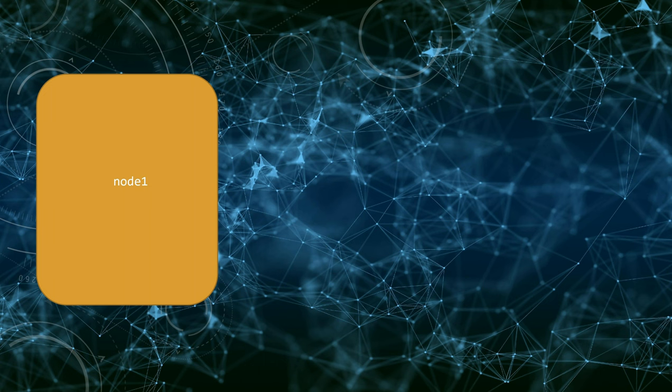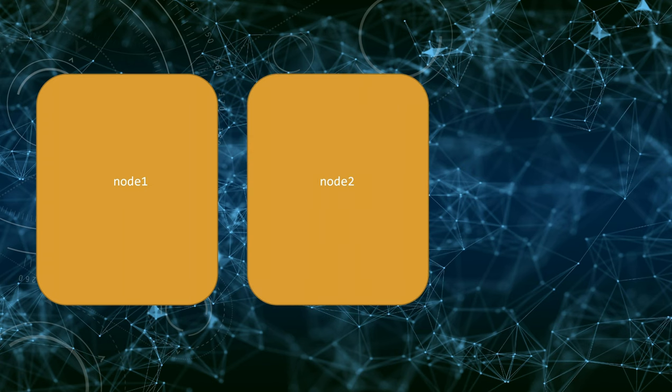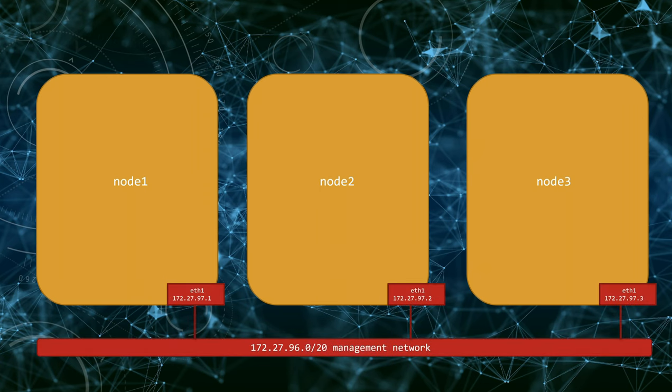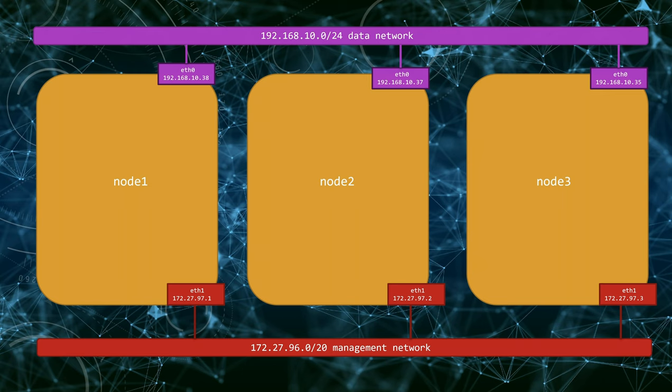Docker has a built-in solution for all of those issues. Imagine we have three servers: node 1, node 2, and node 3, with Docker installed on every server. In my example, nodes are interconnected with two networks: 172.27.96.0/20, called the management network, and 192.168.10.0/24, called the production or data network. We can build Docker Swarm — the native clustering and orchestration solution for Docker containers — which enables us to deploy, manage, and scale containerized applications across multiple machines in a highly available and fault-tolerant manner.